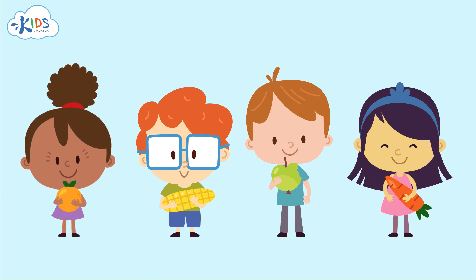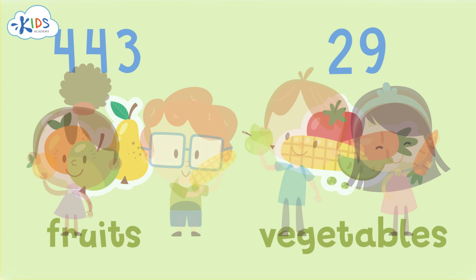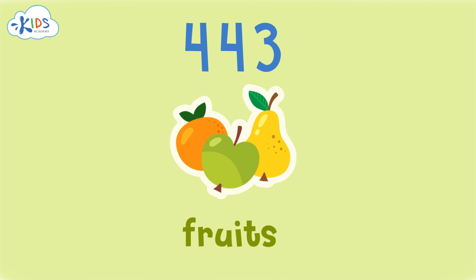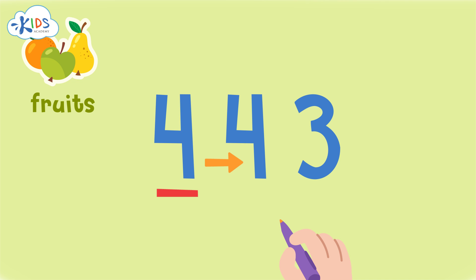These kids want to see how many fruits and vegetables their class has eaten this week. Let's help the kids figure this out quicker by rounding. First we'll round the fruits eaten this week. According to the data, 443 pieces of fruit were eaten this week. Now let's round this number to the nearest hundred. We'll use the strategy of underlining the hundreds place and drawing an arrow to the tens place so we know what numbers we have to look at.